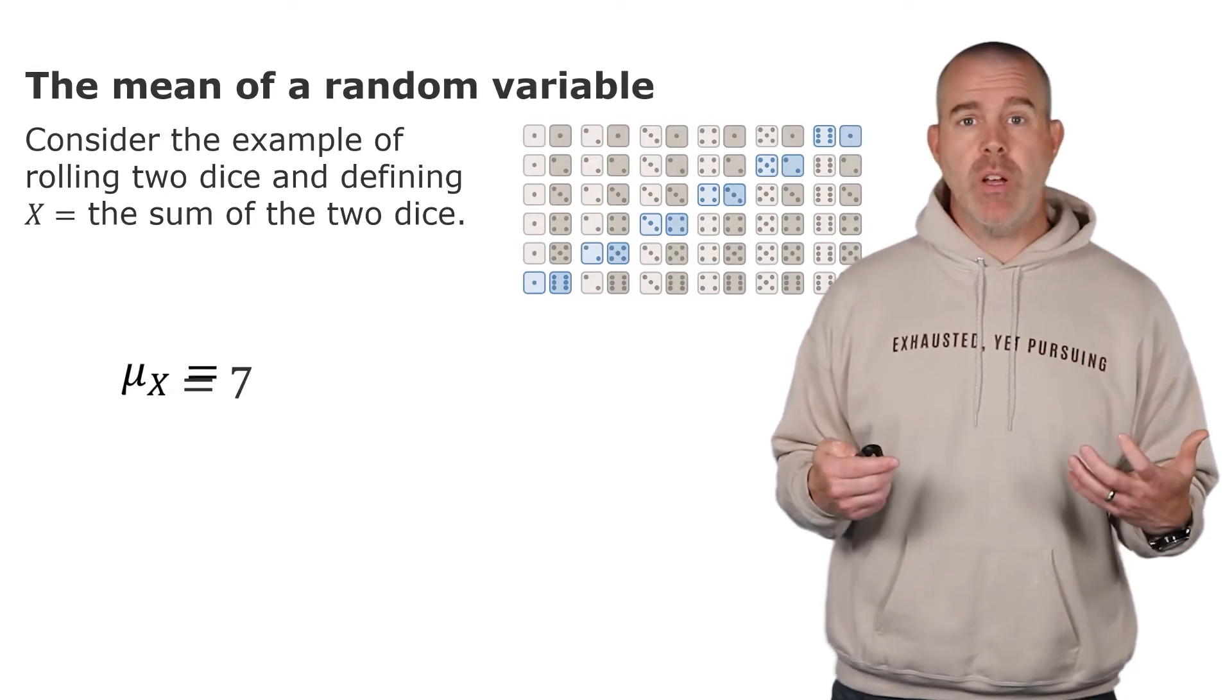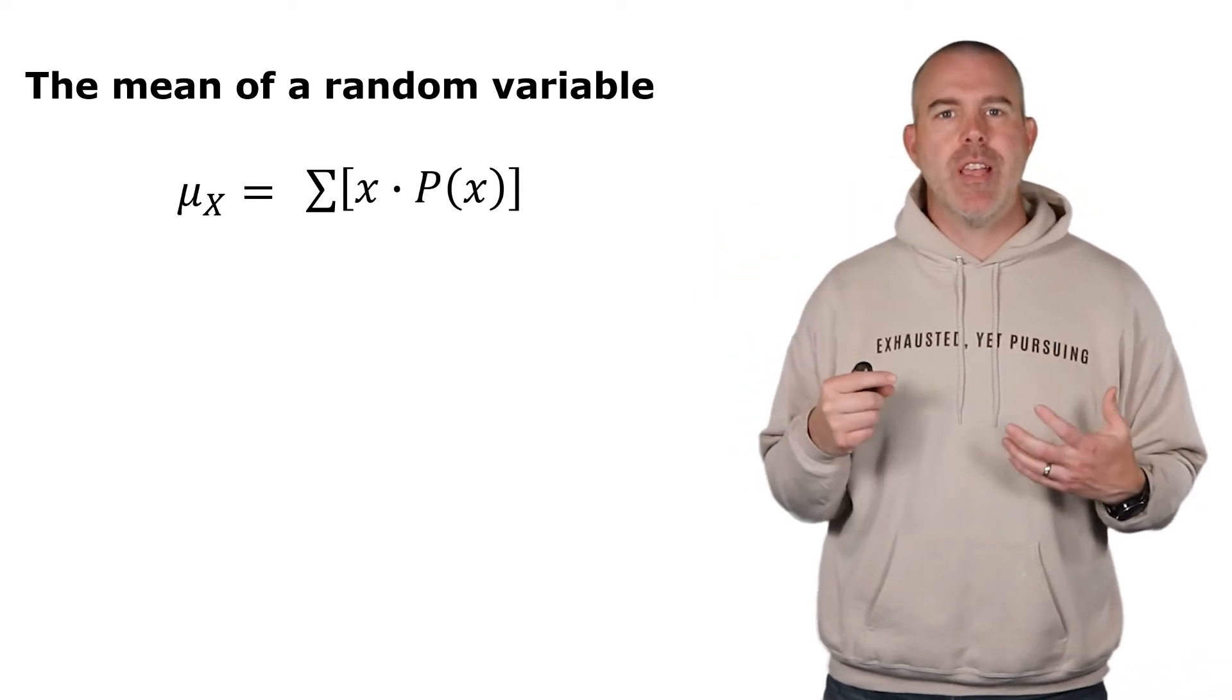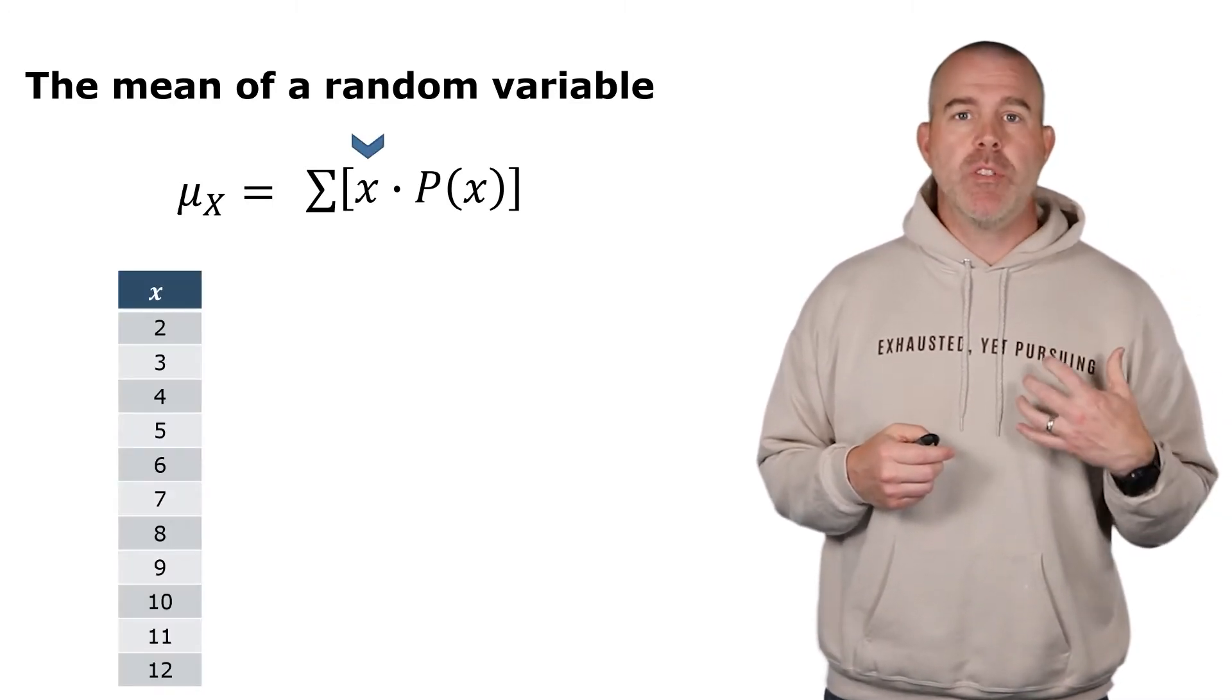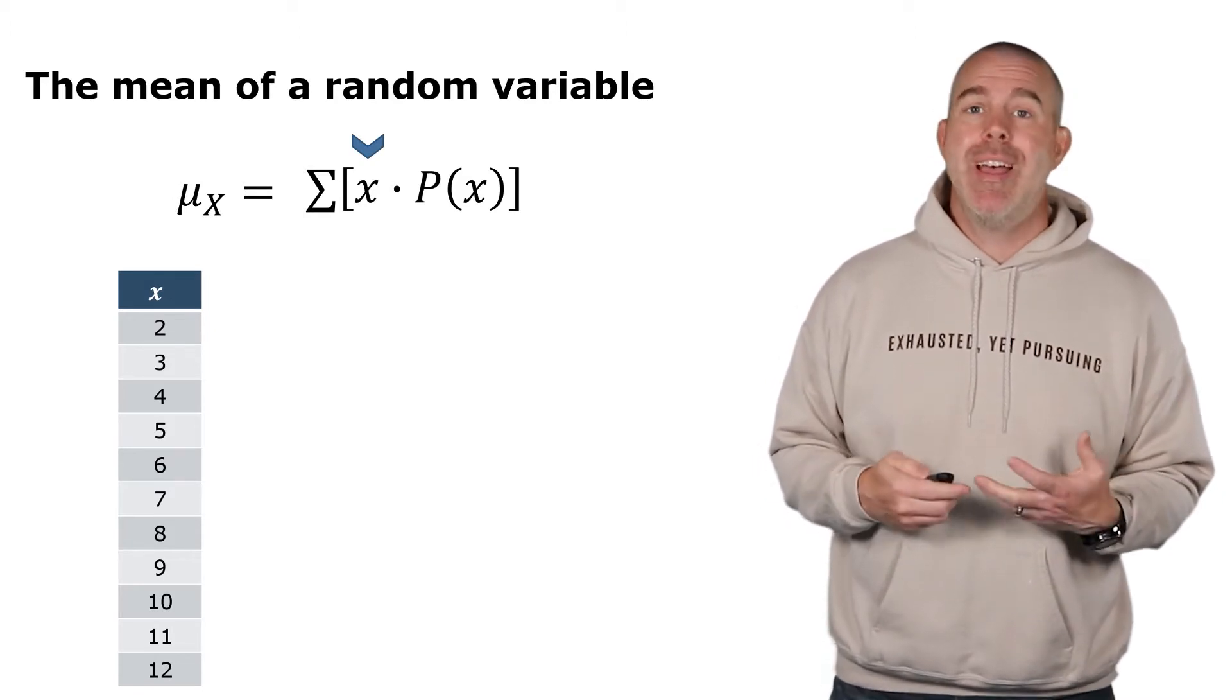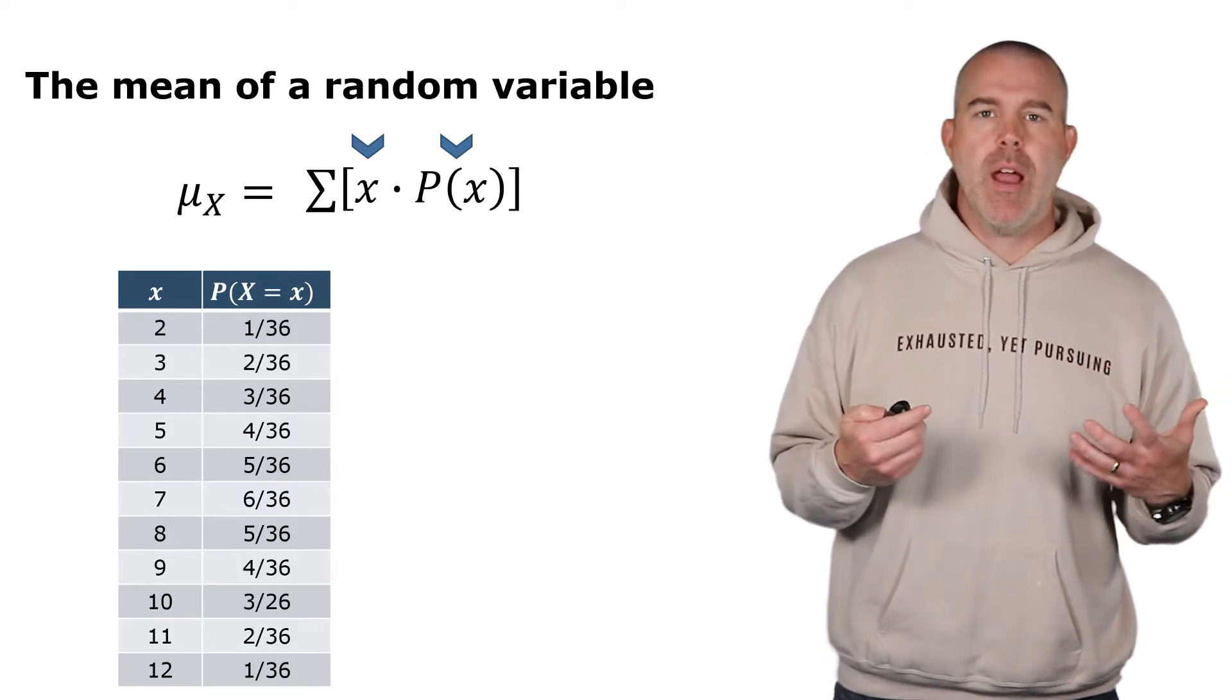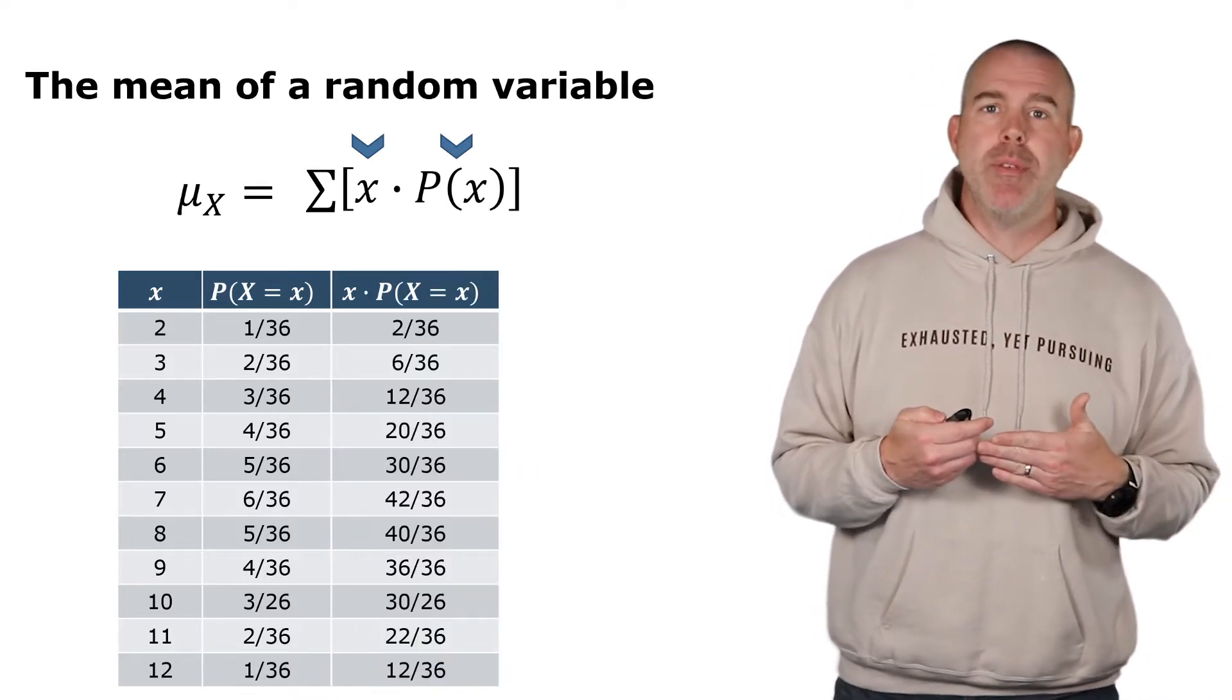If we generalize this, we get the mean of the random variable is this formula here. There's a little Greek letter sigma, x multiplied by probability. Well, what this means is the x's are our outcomes of our random variable—the different possible ones. So for ours it was the two through twelve. The p(x), the probability of x, those are the probabilities that you could compute or you calculate or you figure out somehow. So then you multiply those together. That's the x's times their corresponding probabilities.